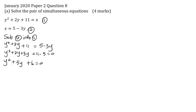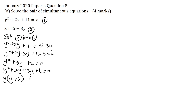Now I'm going to factorize this quadratic equation. 1 multiplied by 6 is 6; factors of 6 that give a sum of 5 — I will use 2 and 3. So this becomes y squared plus 2y plus 3y plus 6 is equal to 0. The HCF of the first two terms is y, so this is y open brackets y plus 2, repeat the brackets, y plus 2 is equal to 0.